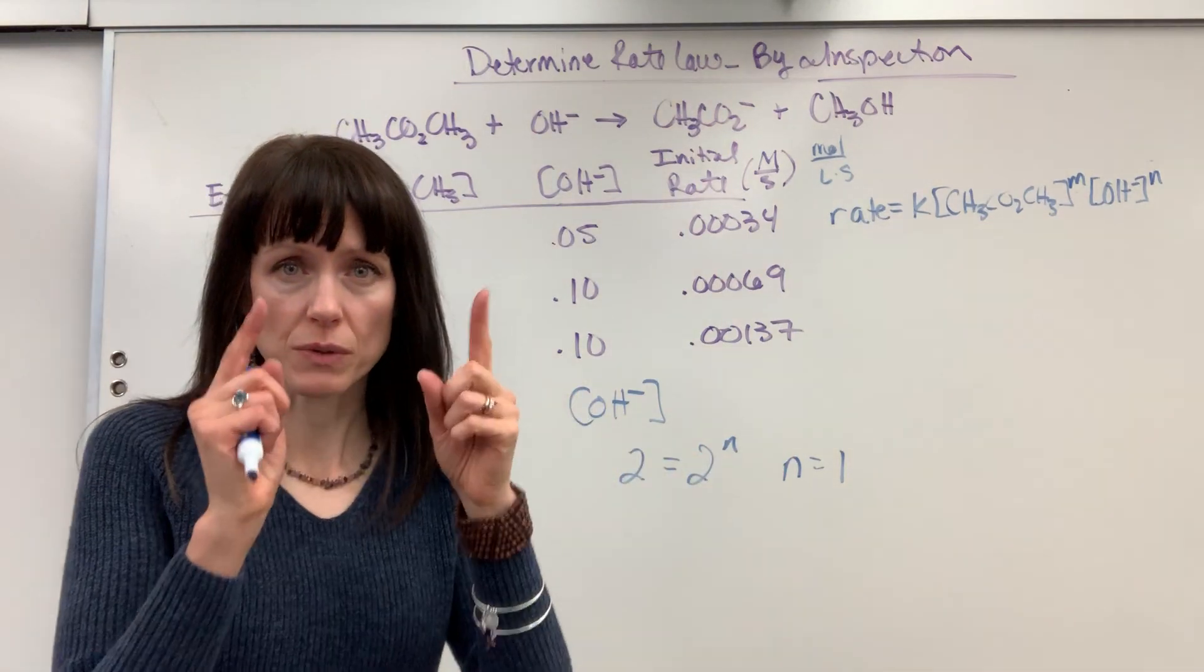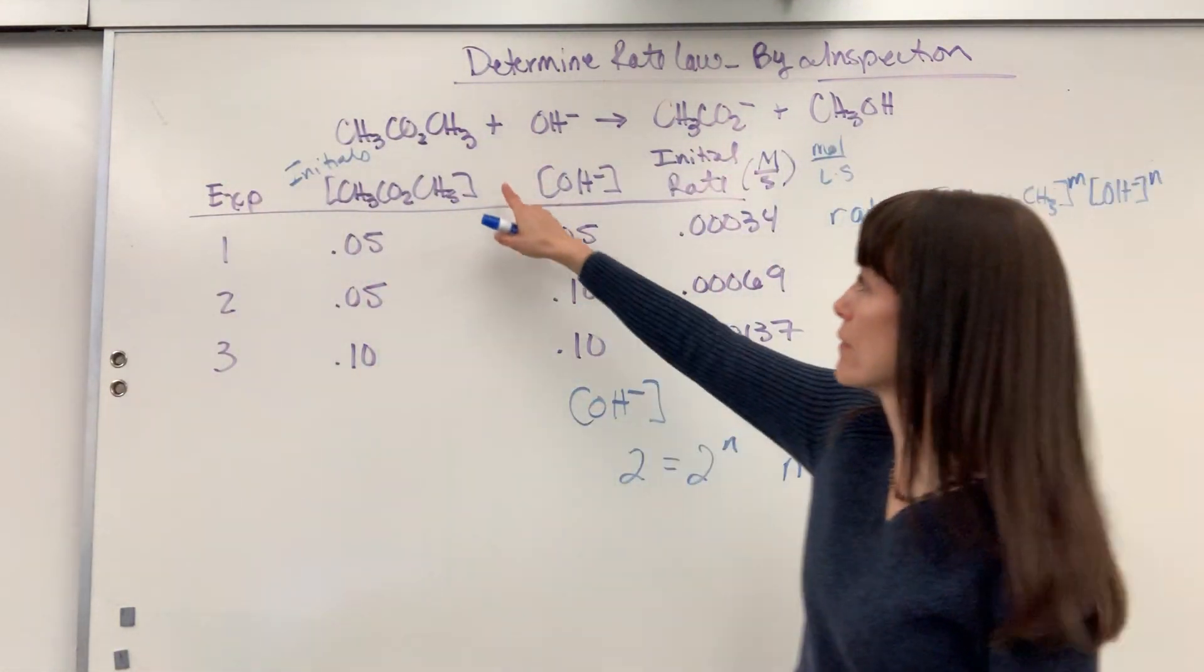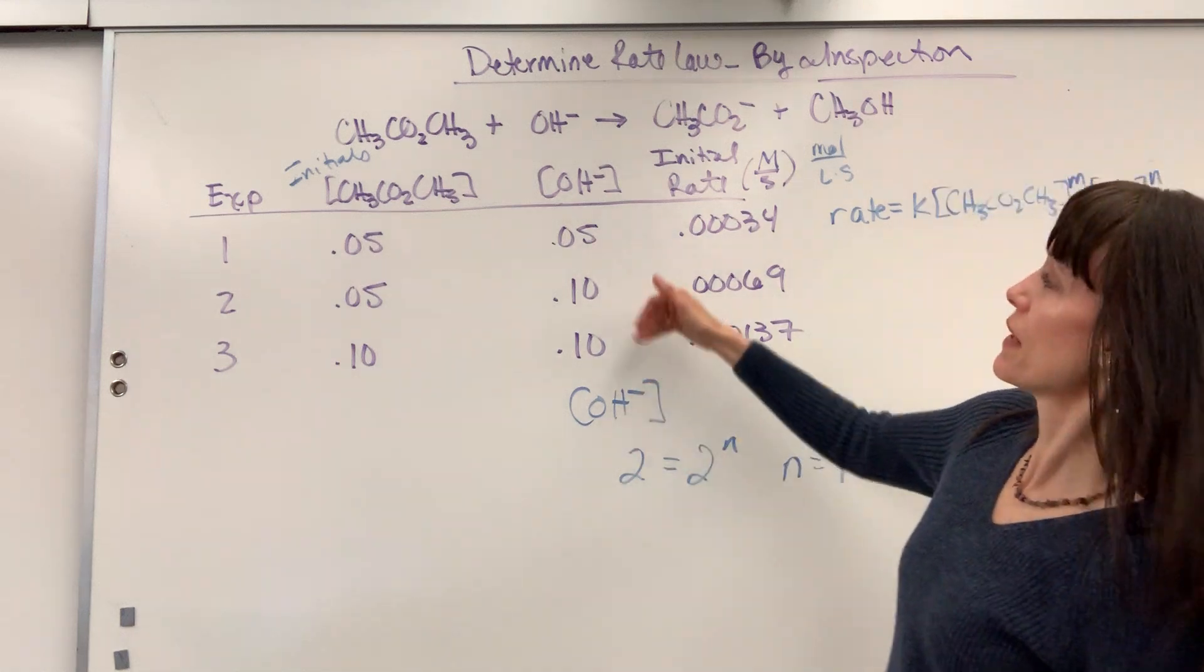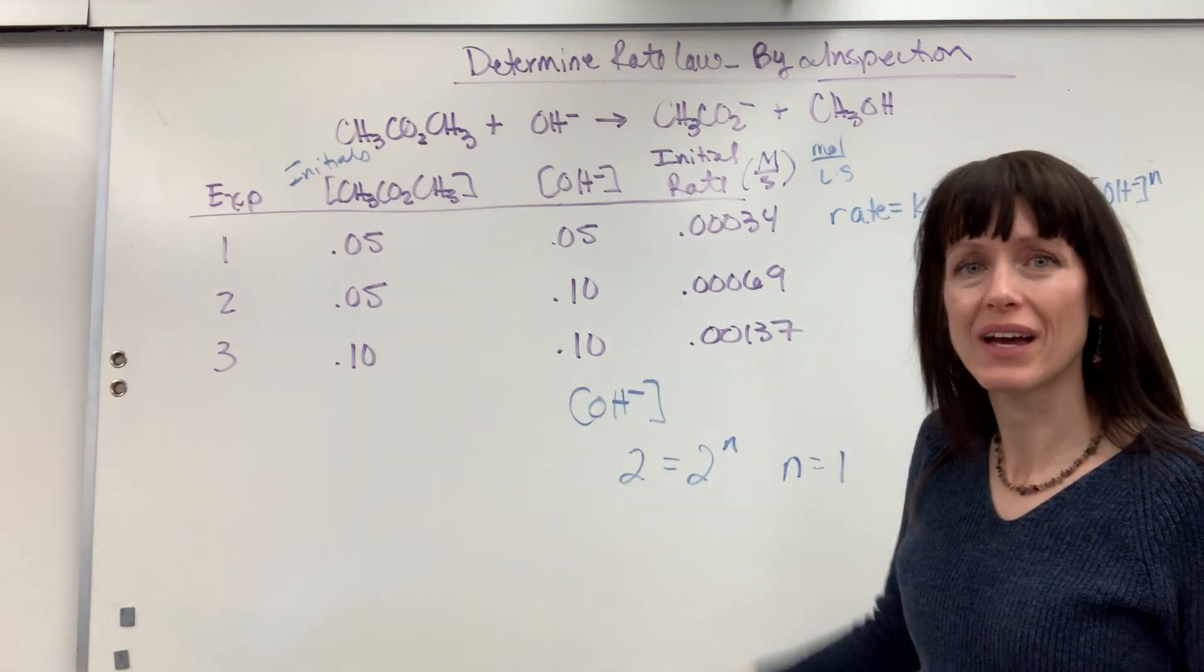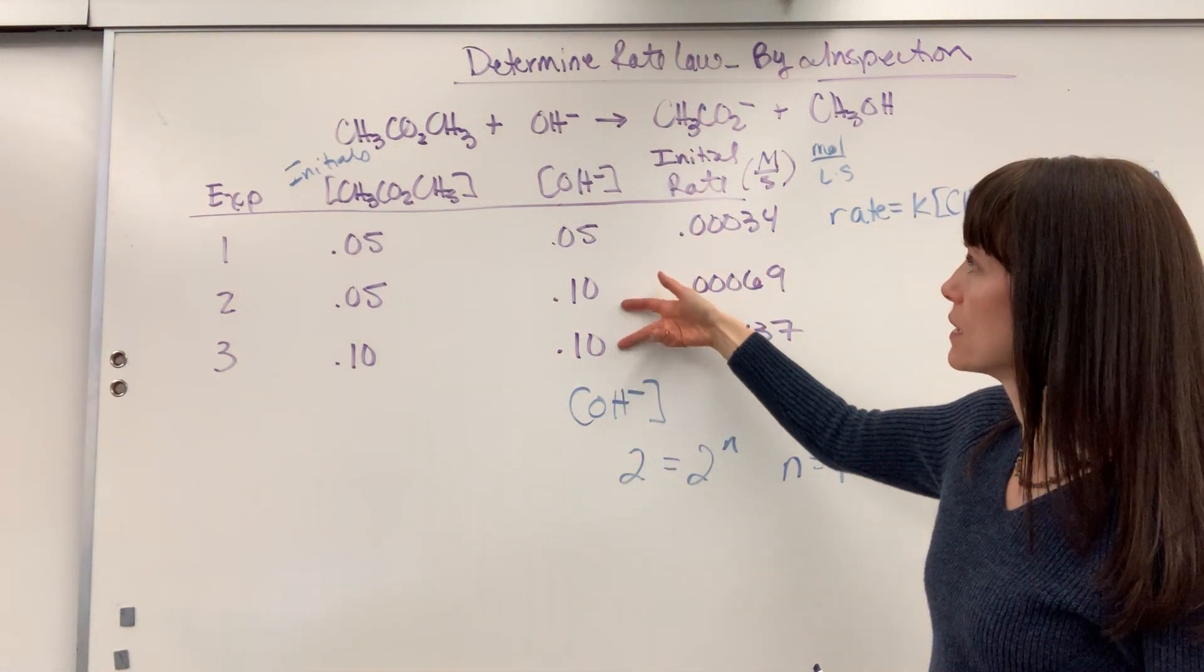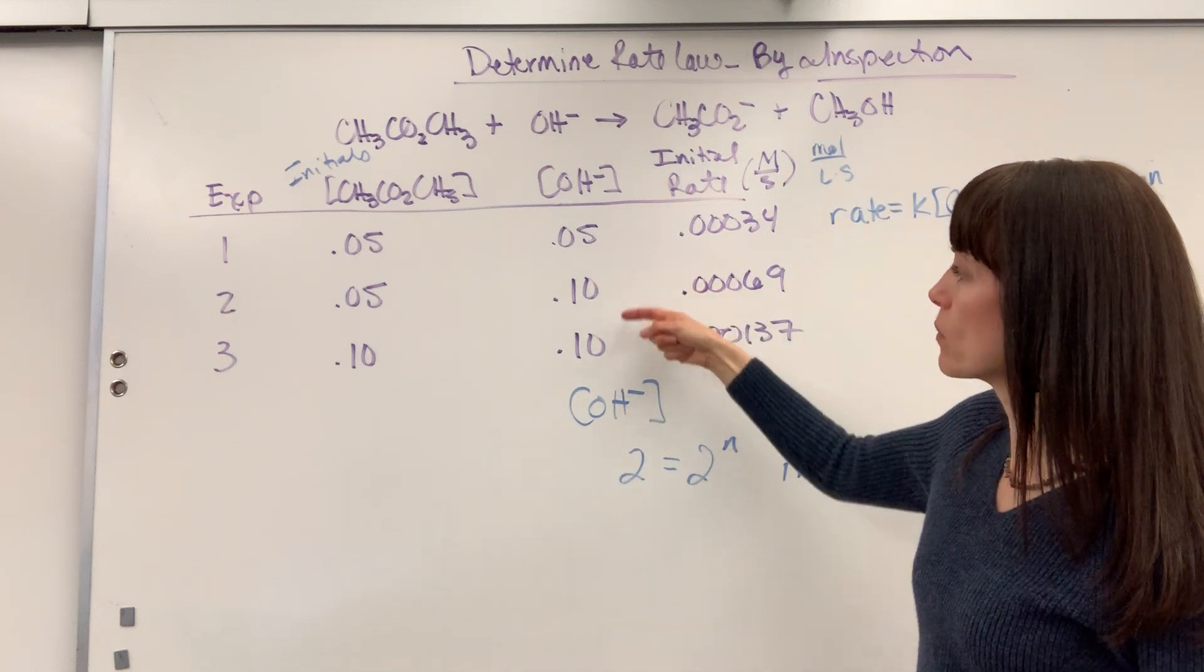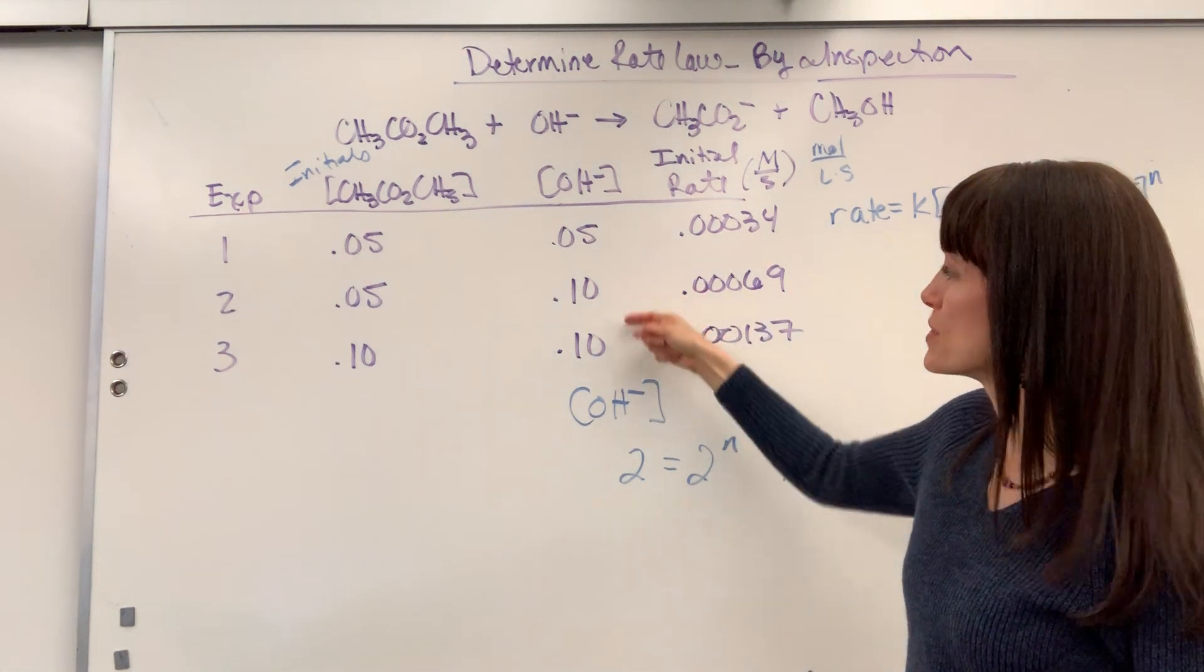Okay, so there's the first one. Now we've got to find M. I've got to find the order of M. So I'm trying to find what's been held constant on the hydroxide. Well, I see it, there it is—it's going to be my 0.1 and 0.1 on experiments 2 and 3.